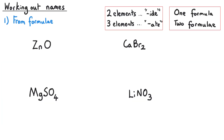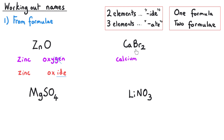Let's practise naming compounds from formulae. First, we decide whether the name ends in '-ide' or '-ate' based on how many elements are present. In the first compound we have zinc and oxygen — two elements — so the name ends in '-ide': zinc oxide. The second also has two elements: Ca is calcium and Br is bromine, so the name ends in '-ide', giving us calcium bromide — bromine loses its last three letters and they're replaced with '-ide'.